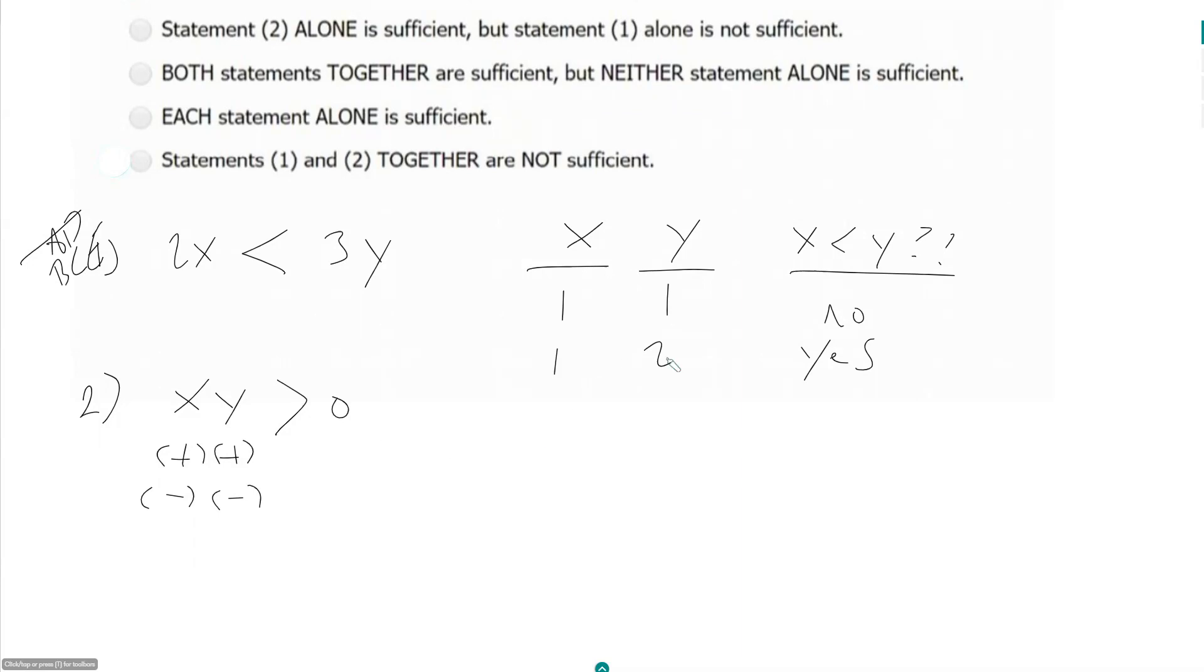It seems like I can use both of the examples I used before. Because in each of these cases, x and y are both positive. So I will get another no and another yes.